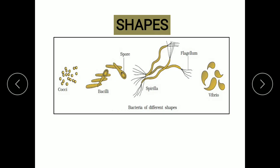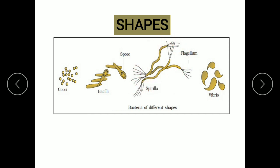Bacteria can be found in different shapes, such as cocci (spherical shape), bacilli (rod shape), spirilla (spiral shape), and vibrio (comma shape).